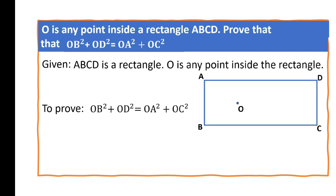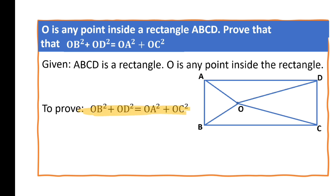Where is OB? This is OB, this is OD, this is OA, and this is OC. By looking at the figure, to prove this, we need a right-angle triangle. There is a relationship between the square of a side and a right-angle triangle, so let us do some construction.